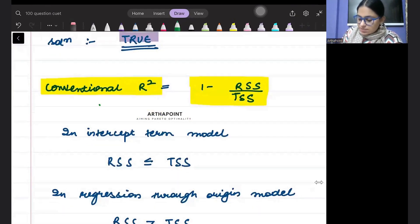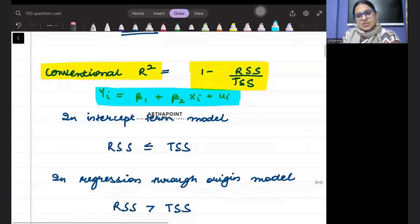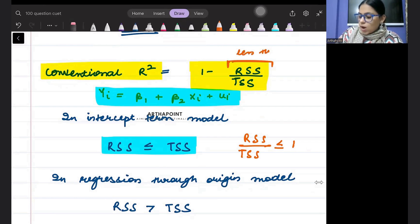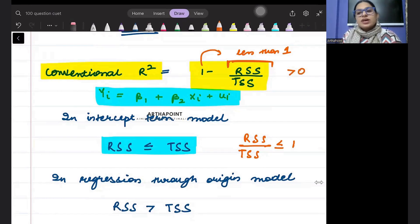Usually, the model with intercept term, yi equals beta 1 plus beta 2 xi plus ui. This model has the assumption that RSS is less than or equal to TSS. So this term usually is less than 1. If this term is less than 1, so 1 minus something less than 1 will be positive. So conventional R-square is always a positive number.